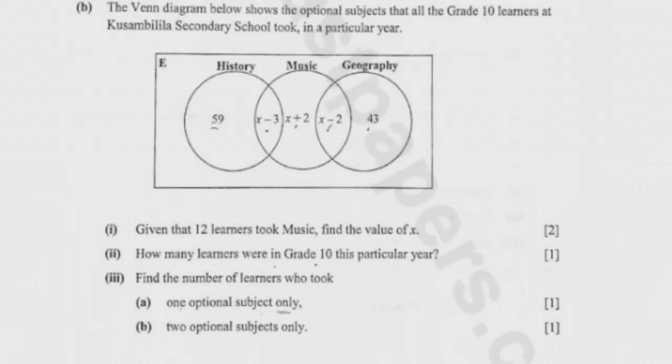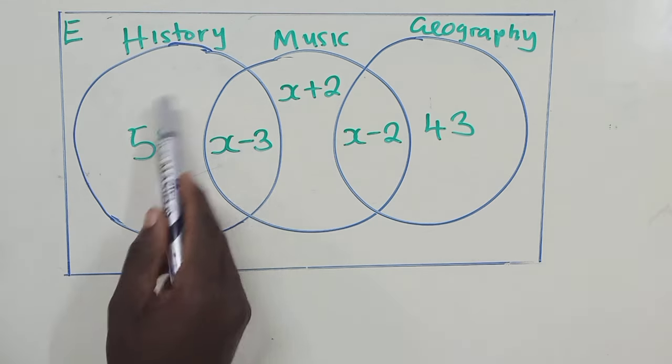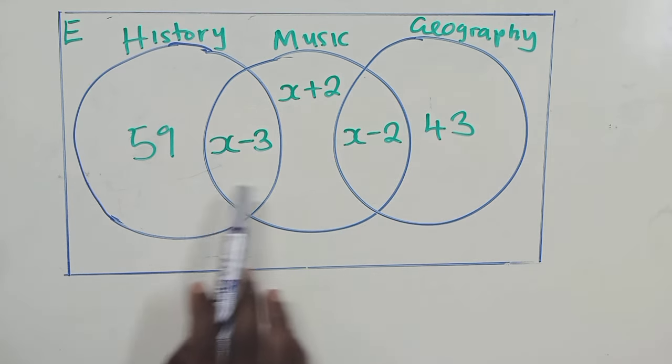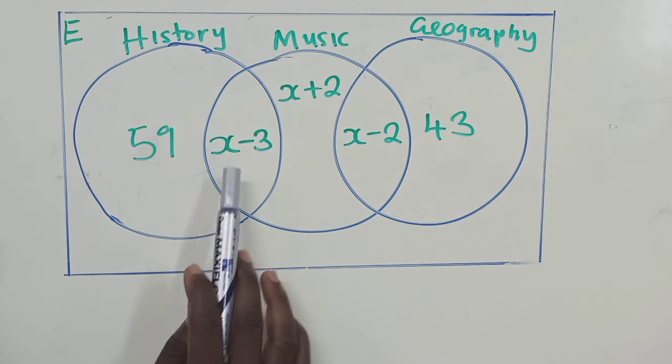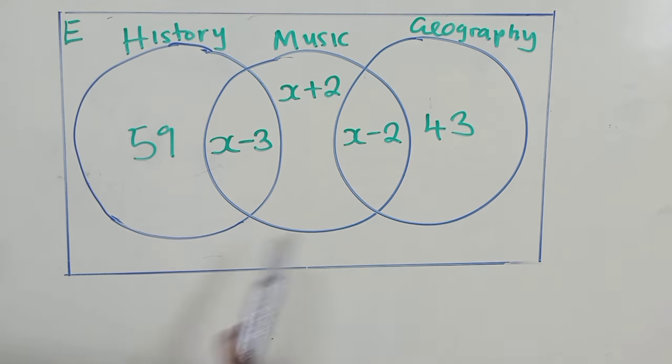The Venn diagram below shows the optional subjects that all the grade 10 learners at Kusambi Lila Secondary School took in a particular year. So this Venn diagram shows the optional subjects that the grade 10 took.